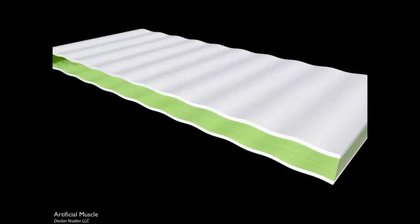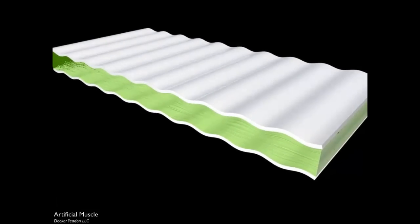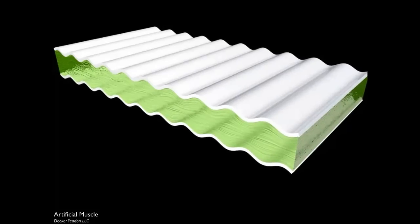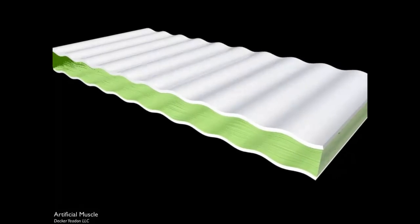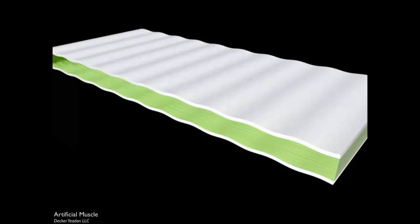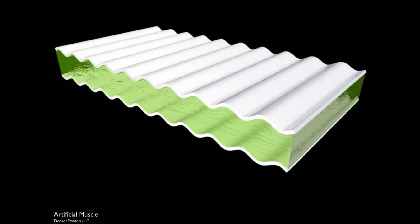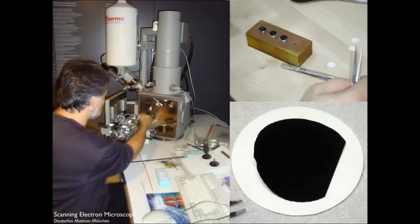That brought us to our next muscle, which is a dielectric elastomer. What you see here is two electrodes, the silvery surface, and as soon as you apply electricity, they're going to be attracted to each other, which will elongate and stretch the polymer that is in the middle.